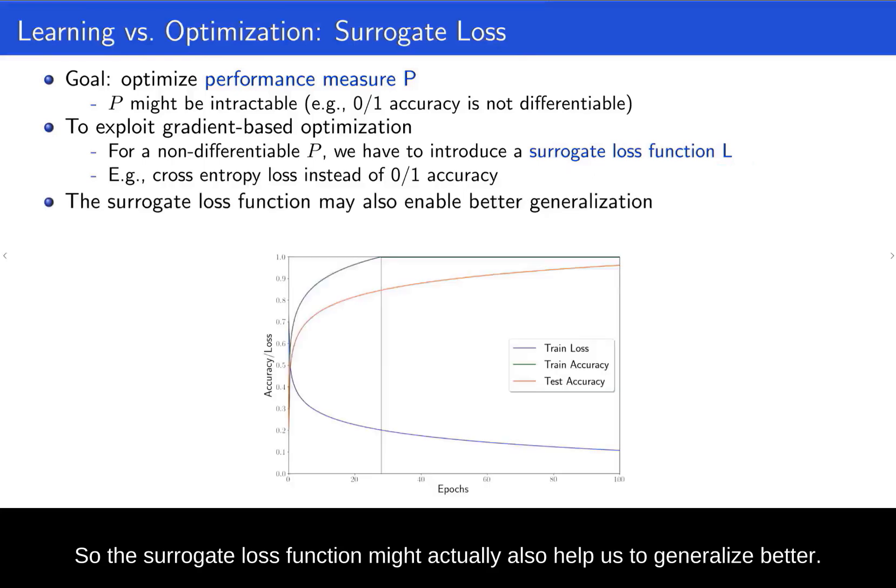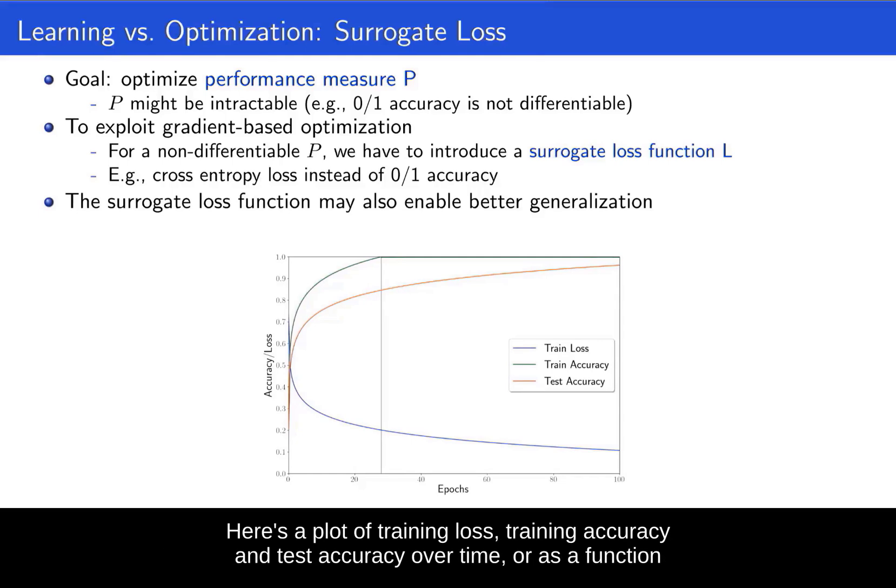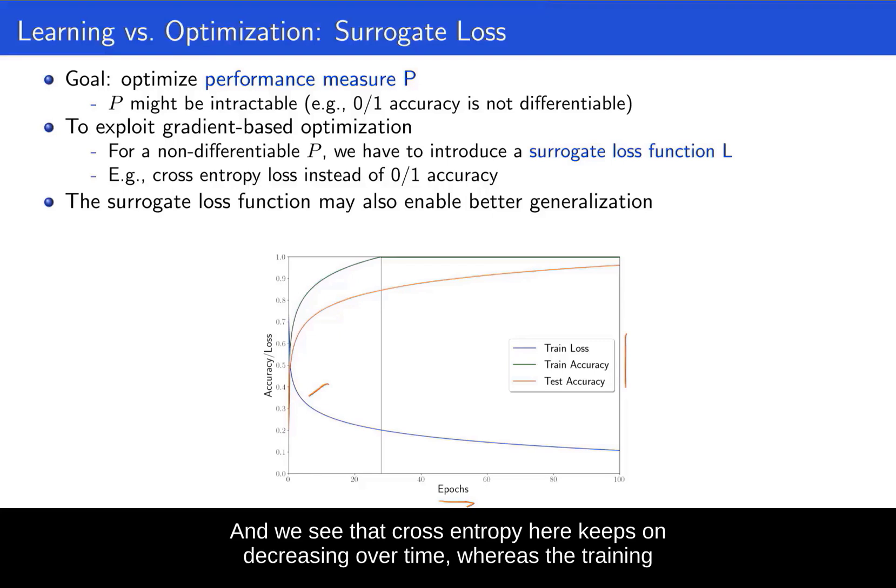So this surrogate loss function might actually also help us to generalize better. Here's a plot of training loss, training accuracy, and test accuracy over time, or as a function of the number of epochs.